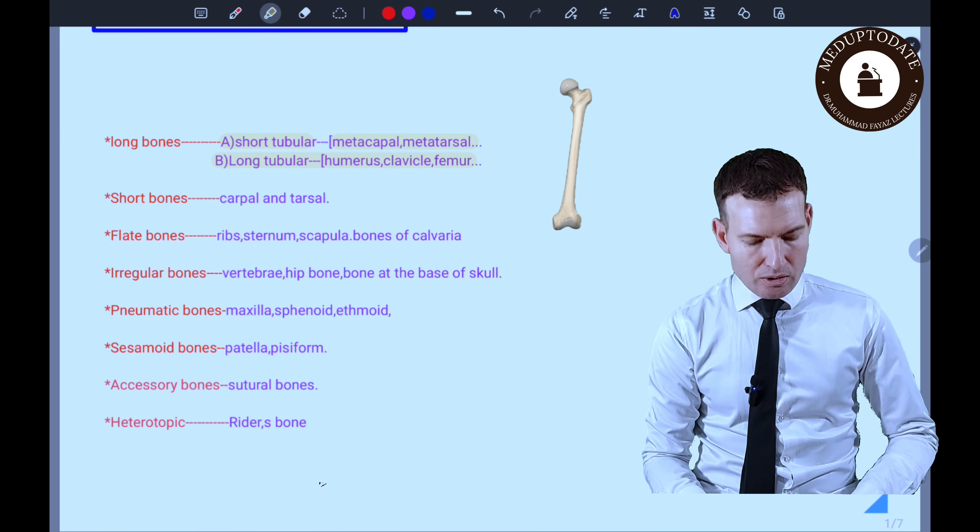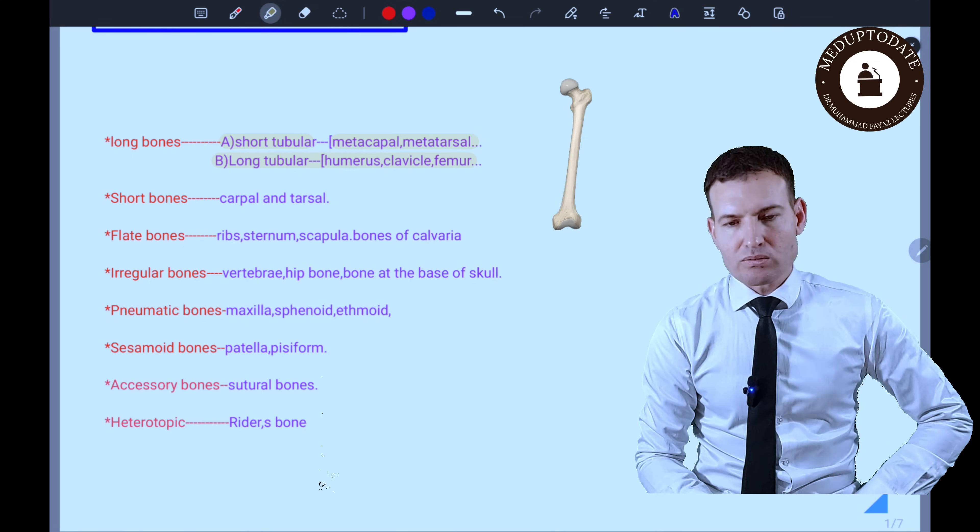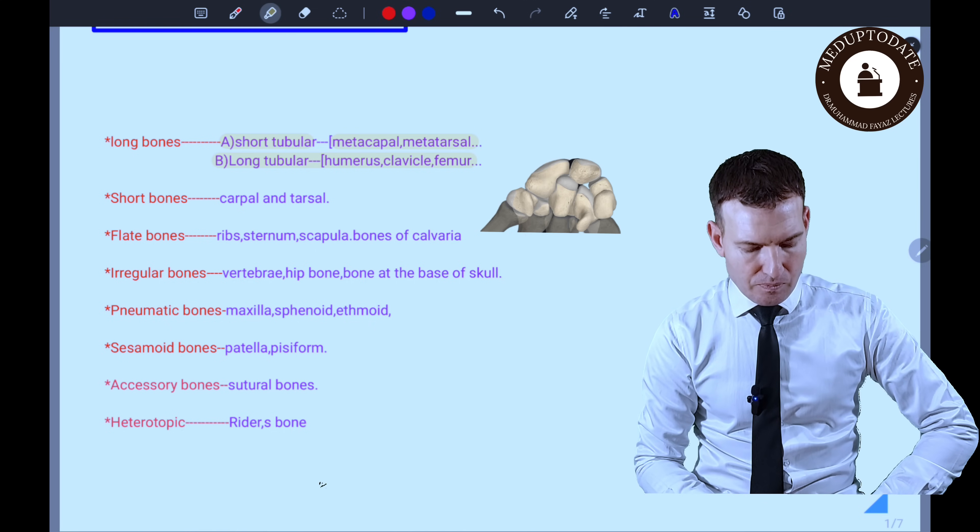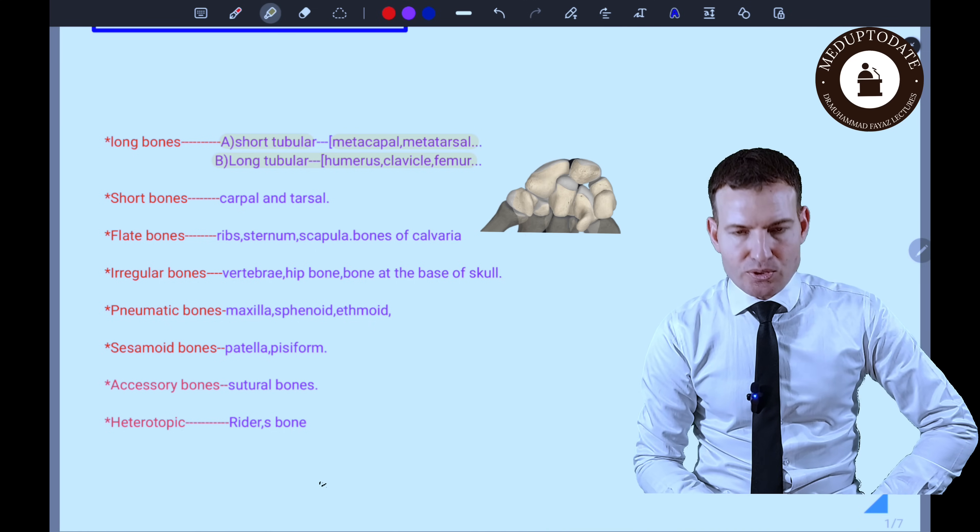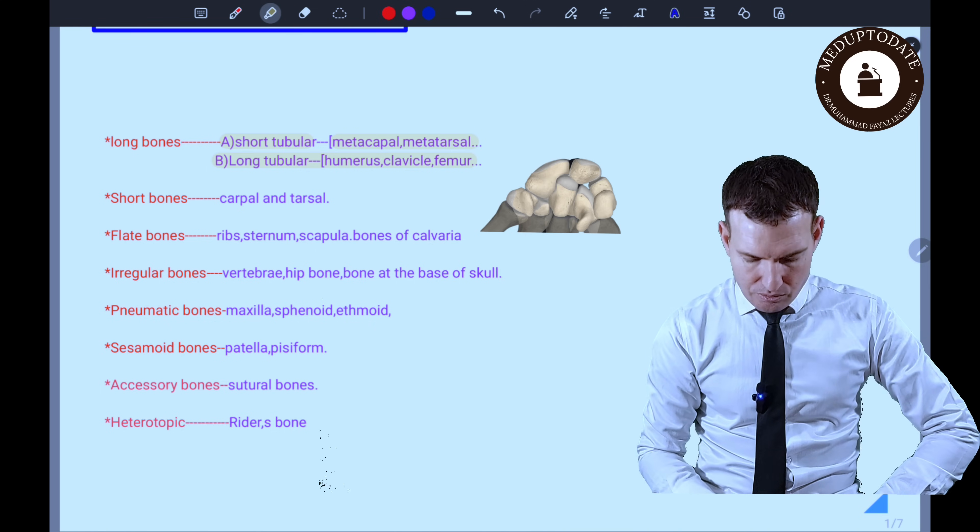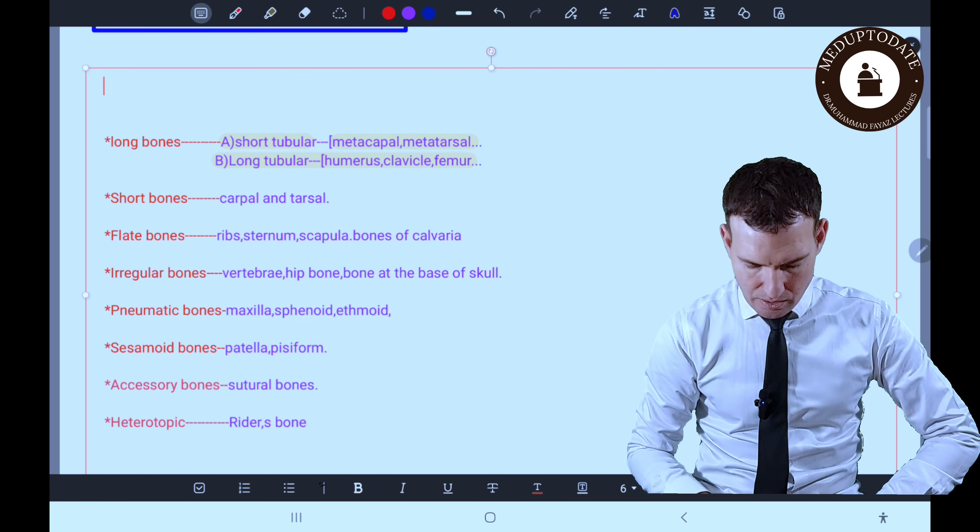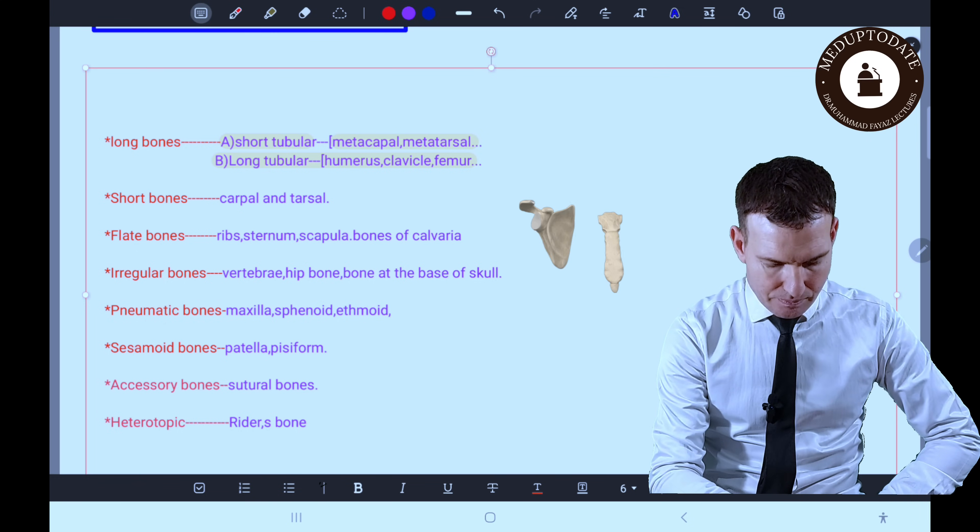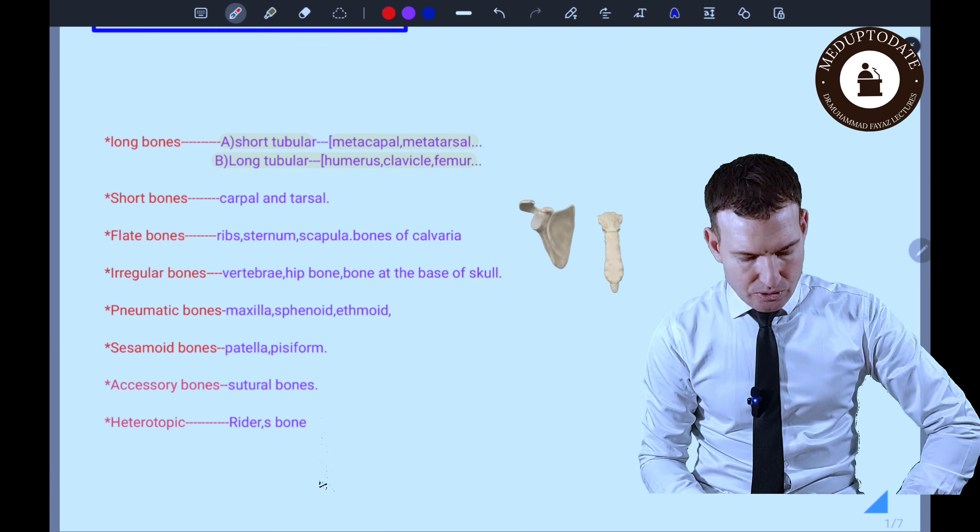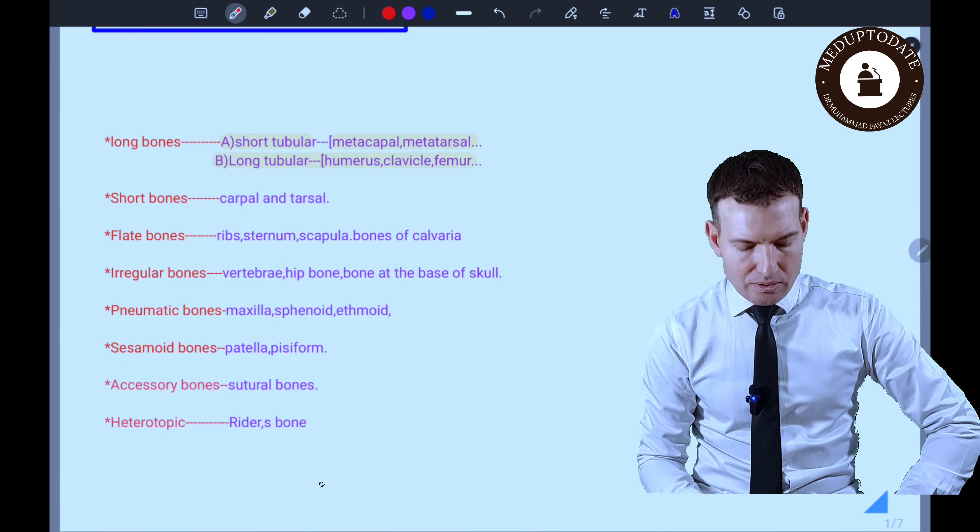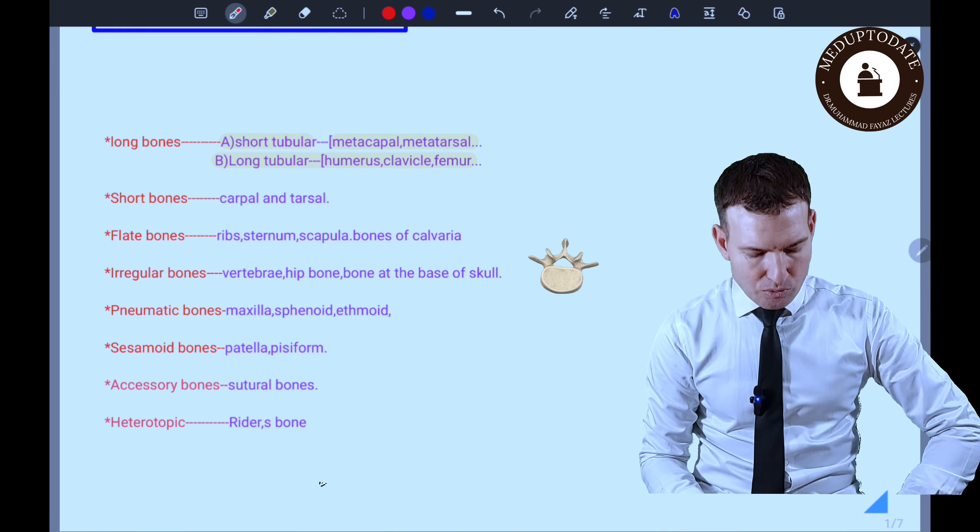Then we have short bones. These bones are approximately equal in length and width. These are carpal bones and tarsal bones. And we have flat bones.